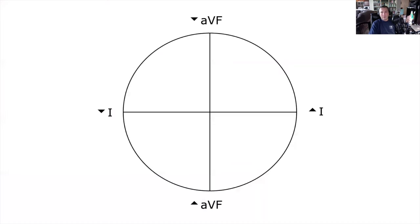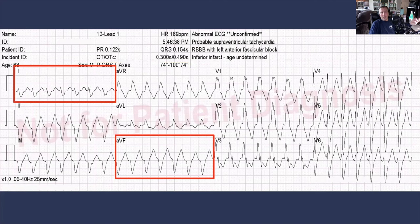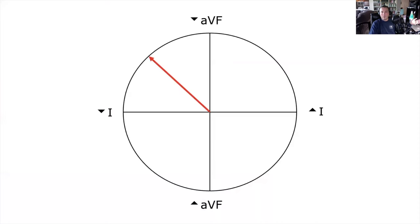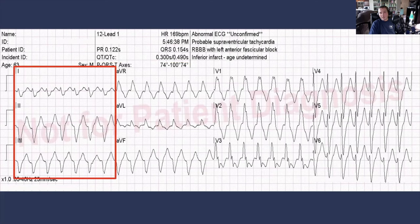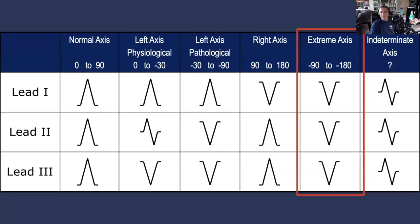Using the quadrant method: slightly negative in lead I and negatively deflected in lead AVF — we're in the right superior quadrant, i.e., extreme right axis deviation. Using the speed method: lead I is negative, lead II is negative, and lead III is negative — so we're in the extreme axis category using all three methods.